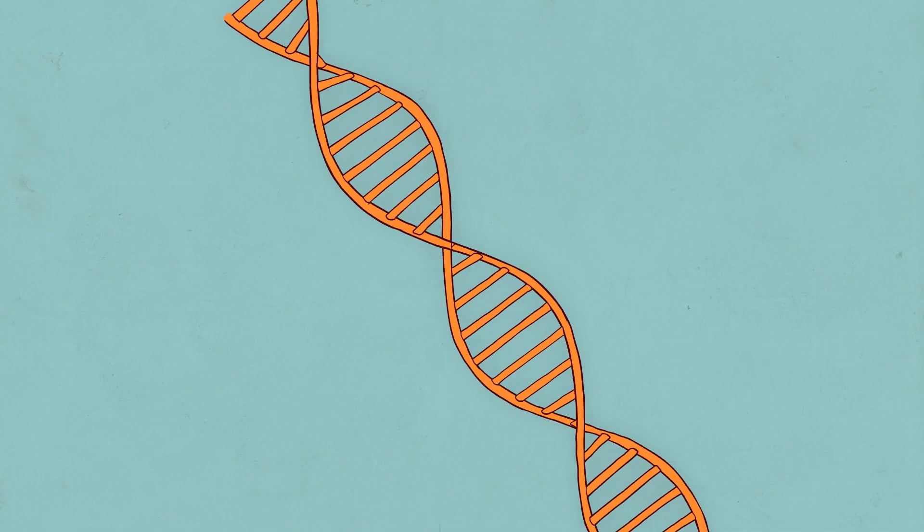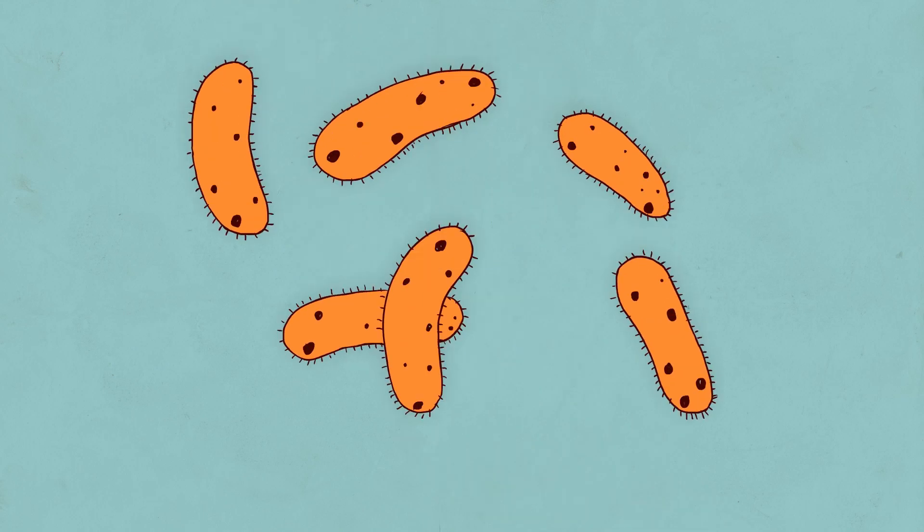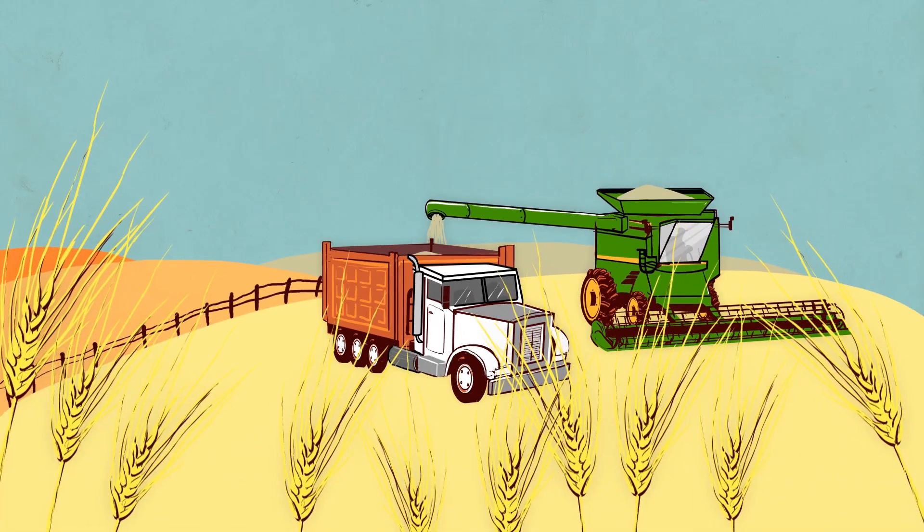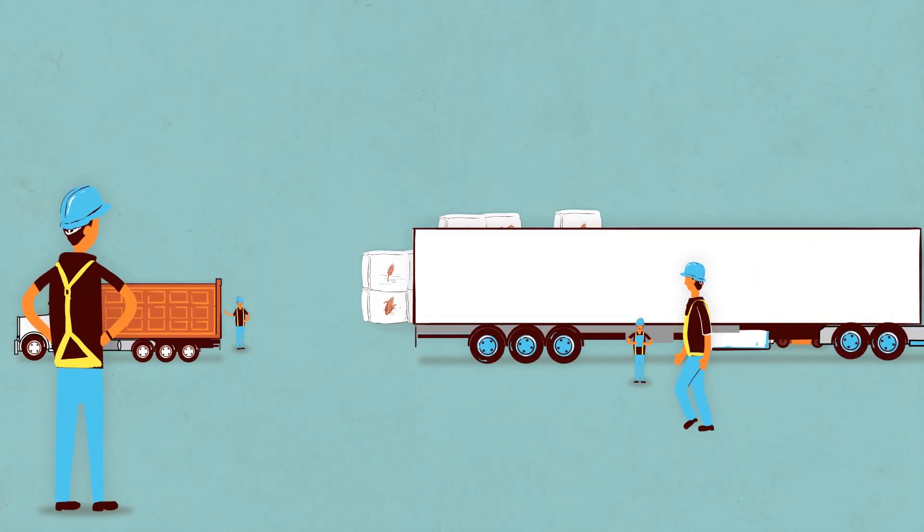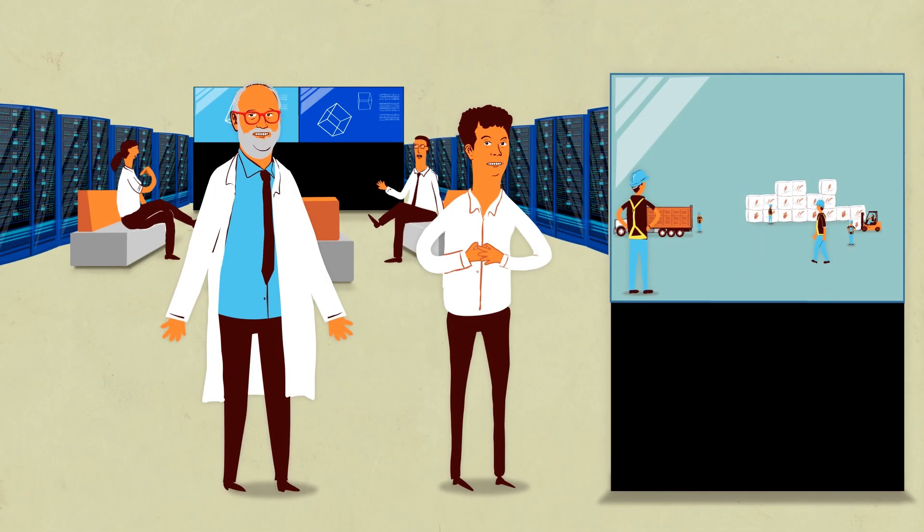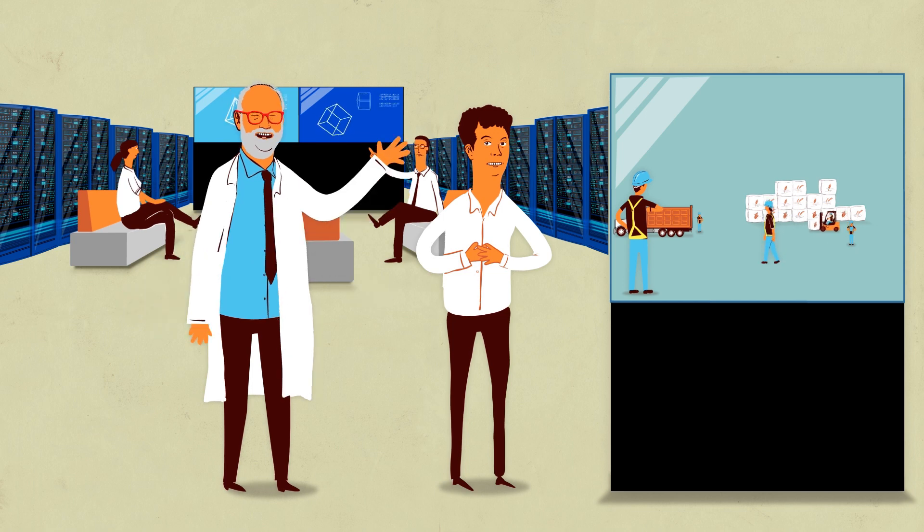And not only that, this tells us things that we never could have seen before, like where the food was grown, how it was transported, and maybe even what happened en route. Our approach to food safety just got a lot smarter.